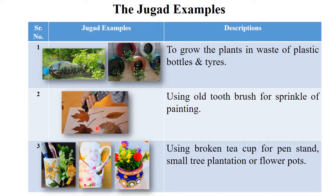The next example is an old toothbrush. You can use an old toothbrush for sprinkling paint. If any student has an interest in drawing or painting, you can use the old toothbrush for sprinkling purposes. Next, in your kitchen there are sometimes broken teacups or broken cups. You can use those broken cups creatively — use different craft ideas and use those broken teacups as a paint stand, small tree plantation, or flower pots. This is also one kind of Jugaad.